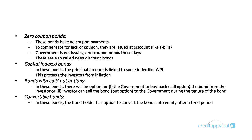Then there are convertible bonds. Convertible bonds means the bond holder has an option to convert the bonds into equity. Bonds and equity are two separate instruments — a bond is a debt instrument, whereas equity is a form of ownership. But convertible bonds give you an option to convert the bond into a share. If you feel that shares are more attractive, you can opt for the conversion.